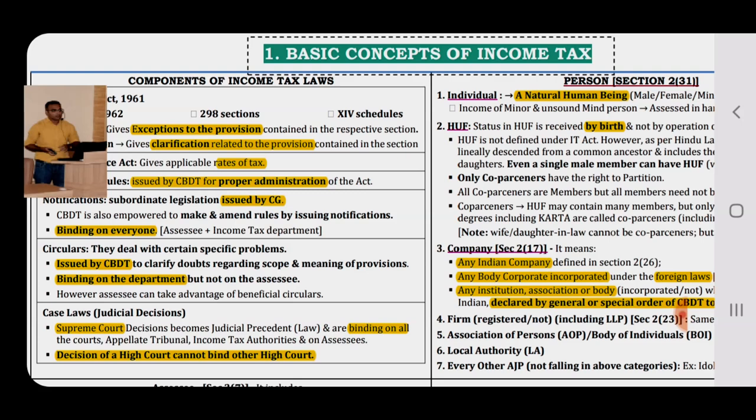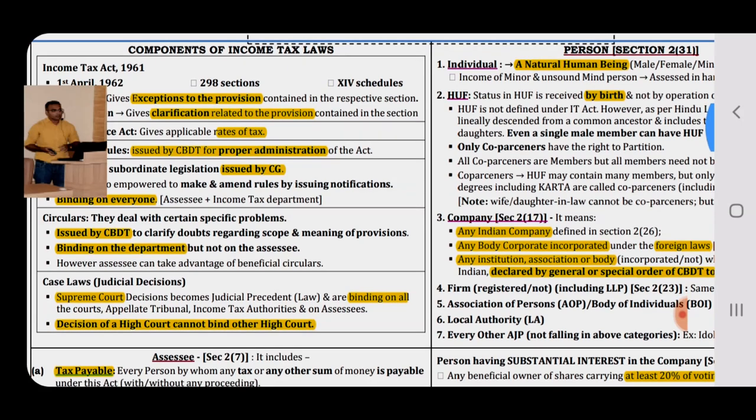Number 5 — Case Laws are regarded as Judicial Decisions, which are generally passed by the Supreme Court and High Court. The Supreme Court is the topmost court in our country, so any decision passed by the Supreme Court is the law of the land and it is binding on all courts, tribunals, income tax authorities and assessees. However, decisions of the High Court cannot bind other High Courts — they are restricted to the jurisdiction of the respective state only.